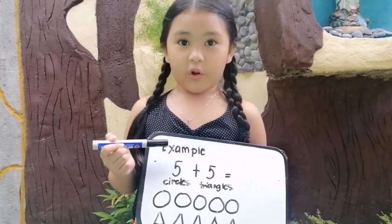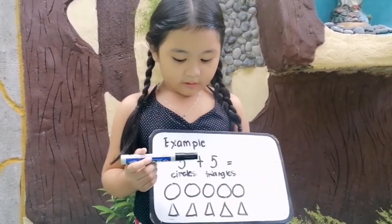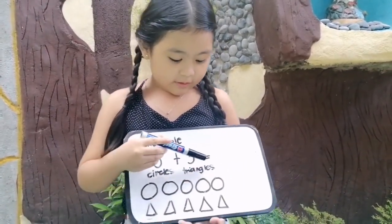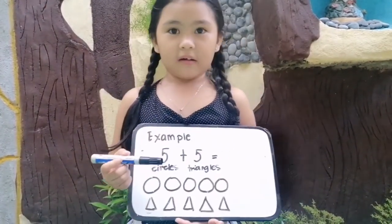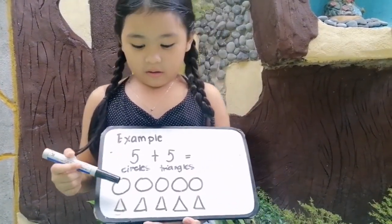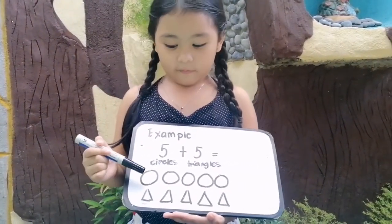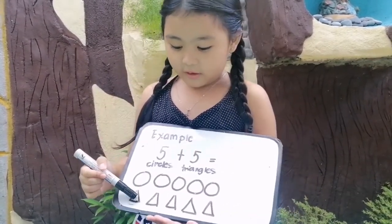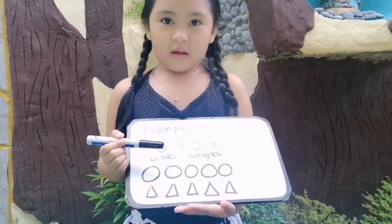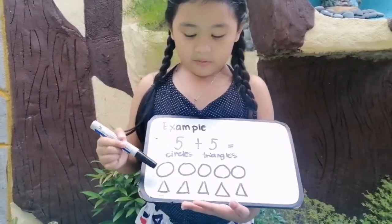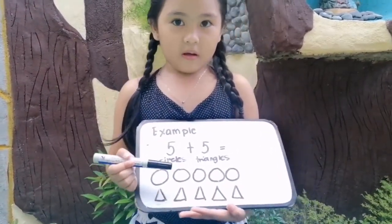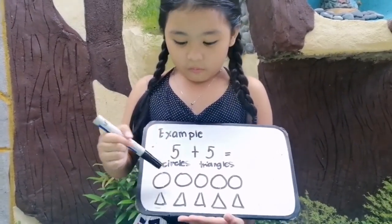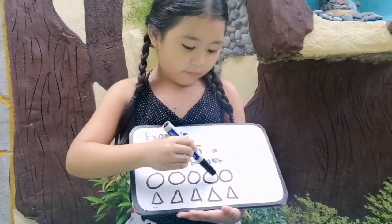Example: 5 circles plus 5 triangles equals. Ang gagawin mo ay gumawa ng 5 circles at 5 triangles at pagsasamahin mo para makuha mo ang sagot. 1, 2, 3, 4, 5,